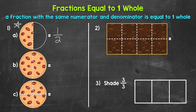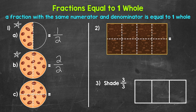Let's build on this and look at cookie B. For cookie B, we can see that we have the whole cookie. Cookie B is also divided into a total of two equal parts, so two is our denominator. But here, two parts of the cookie are left, so two is our numerator as well. Two over two — two halves — is equal to one whole. We have the same numerator and denominator, so this fraction is equal to one whole.